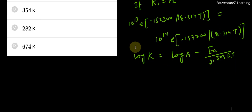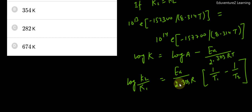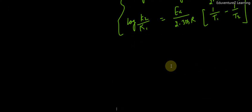The value when log K1 and K2 are equal, there's also a formula log K2 by K1 equals to Ea by 2.303 RT times 1 by T1 minus 1 by T2. If we relate both these formulas together, the value will start to look like this.